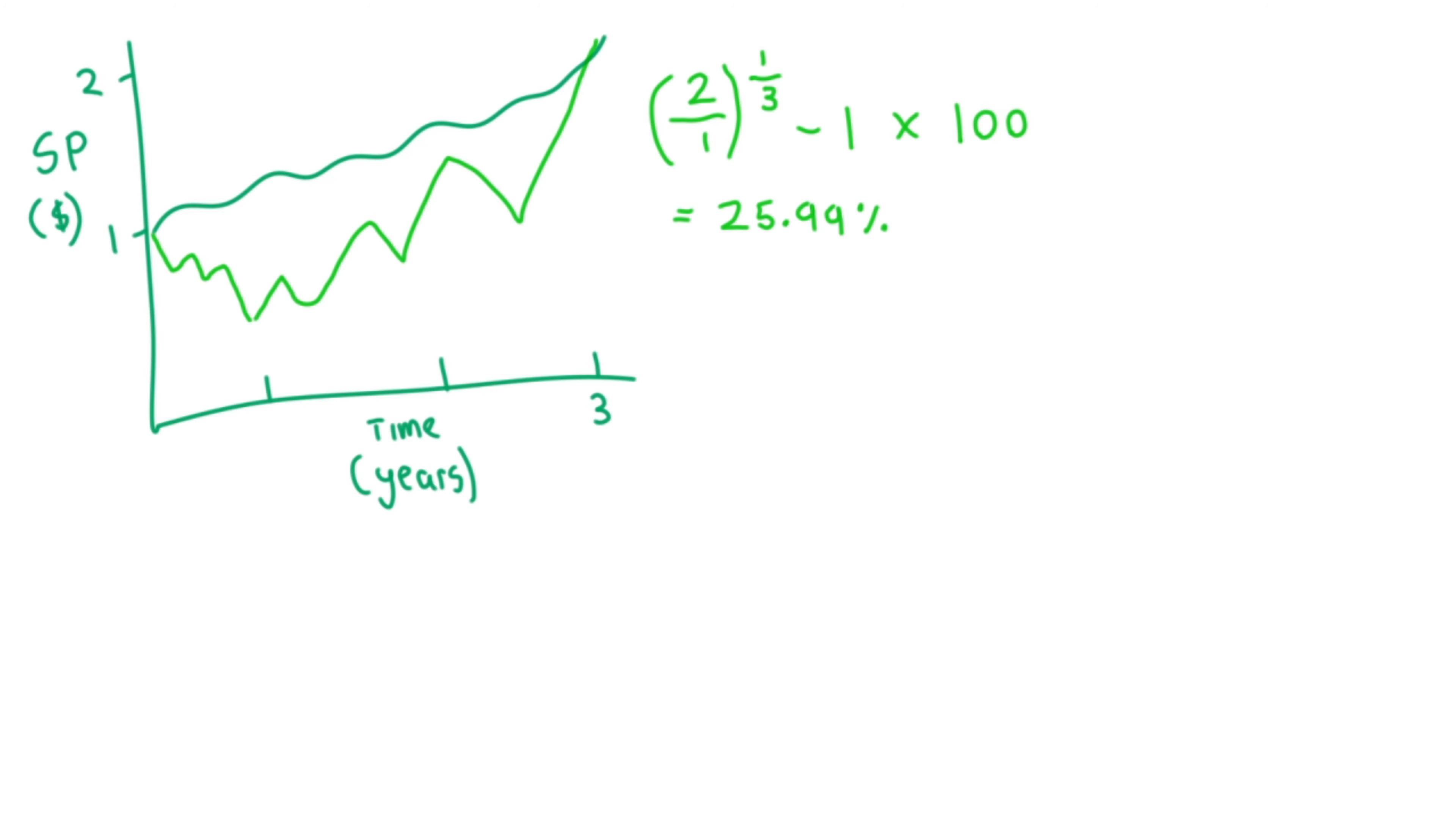If we were looking at raw annualized stock return data, due to market volatility, the year-to-year growth of an investment will appear erratic and uneven. CAGR helps smooth returns when growth rates are expected to be volatile and inconsistent.